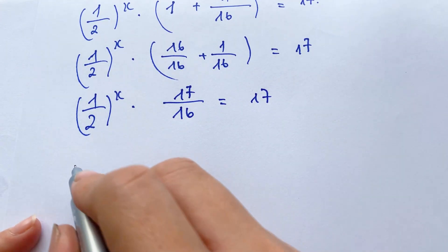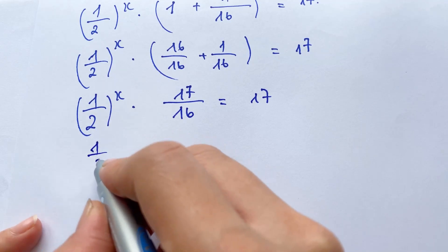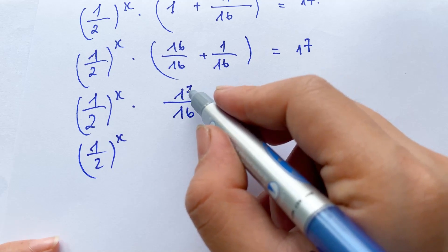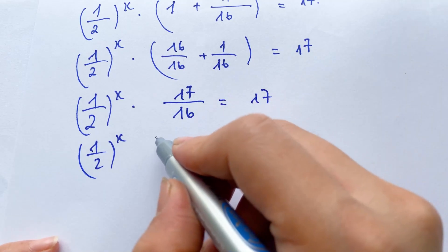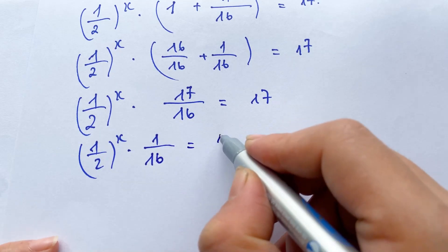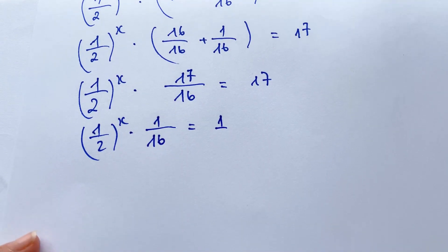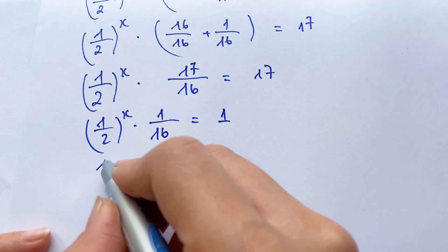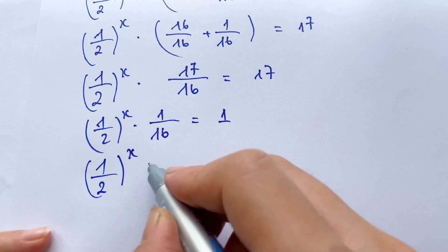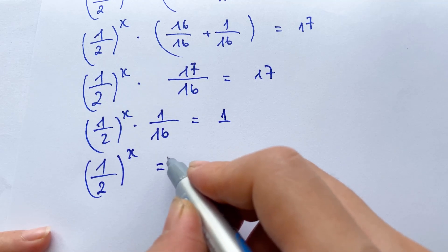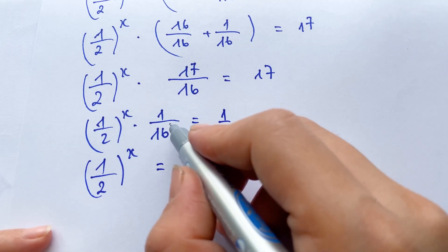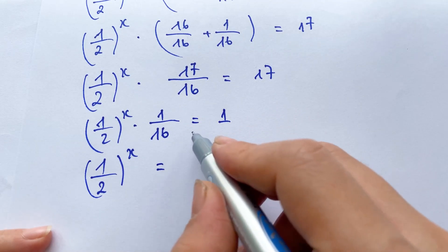Yes, and then for this case, you need to divide both sides by 17. Therefore, we can say 1 over 16 equals 1, and then (1/2)^x equals 1. You need to multiply both sides by 16.